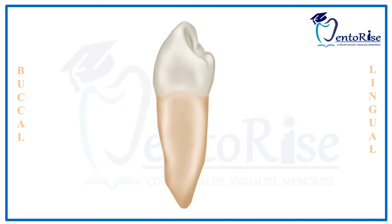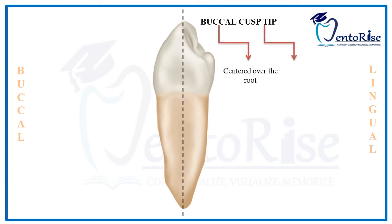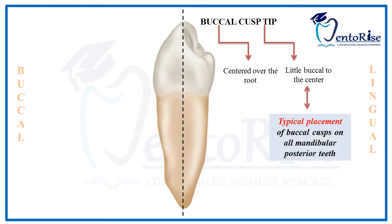Now let's talk about the cusps individually. The third heading under the mesial aspect would be the buccal cusp. Regarding the tip of the buccal cusp, it can have two locations: it can either be centered over the root, or it can be slightly buccal to the center. If the buccal cusp tip is placed slightly buccal to the center, this is the typical placement of buccal cusps on all the mandibular posterior teeth.